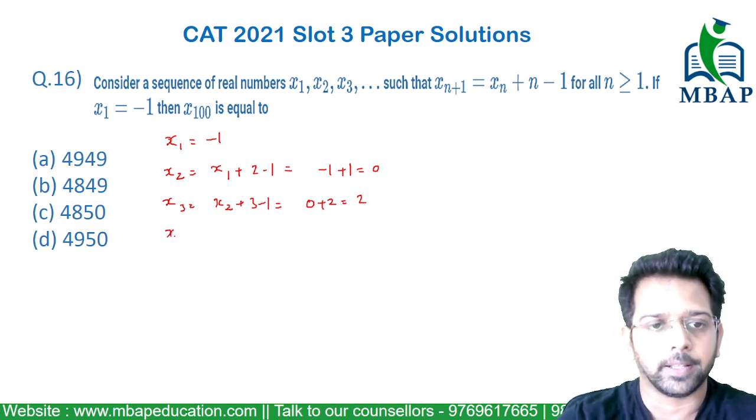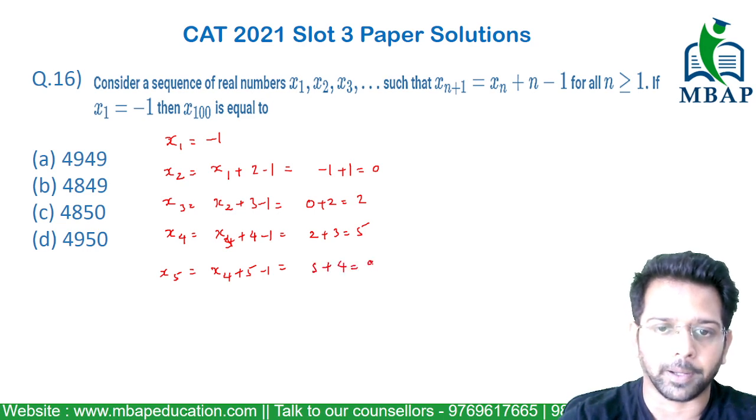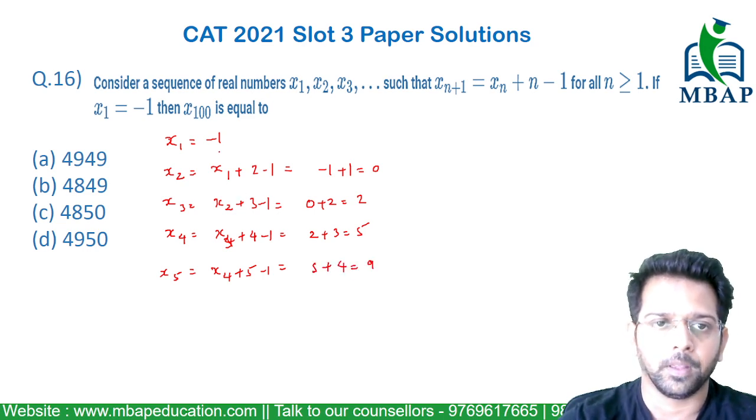Let's go ahead. The next term x4 will be x3 plus 4 minus 1. x3 is 2, so 2 plus 3 comes out to be 5. x5 will be x4 plus 5 minus 1, which is 5 plus 4 coming out to be 9. So minus 1, 0, 2, 5, 9 are the values I am able to find out.